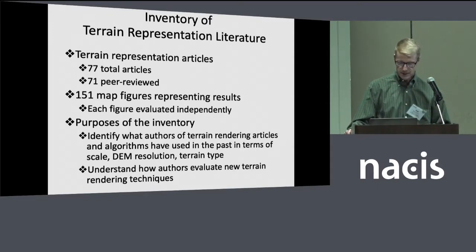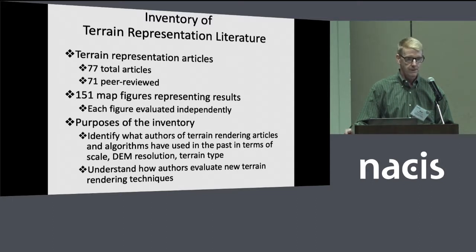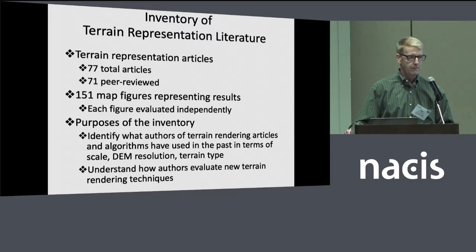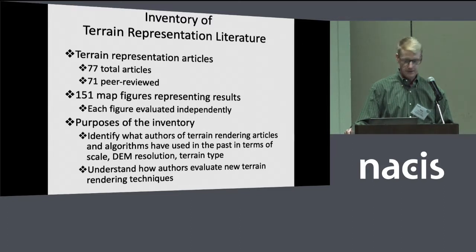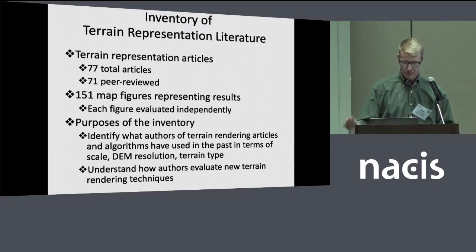The inventory we did covered a total of 77 terrain representation articles — 71 of those were peer reviewed. Among those 77 publications, there were about 151 map figures represented, because sometimes people would show more than one result of the same method or try a couple of different methods. We looked at each publication and at each individual figure. The purpose was to identify what authors of terrain rendering were doing with respect to map scale, DEM resolution, terrain type, and other aspects.